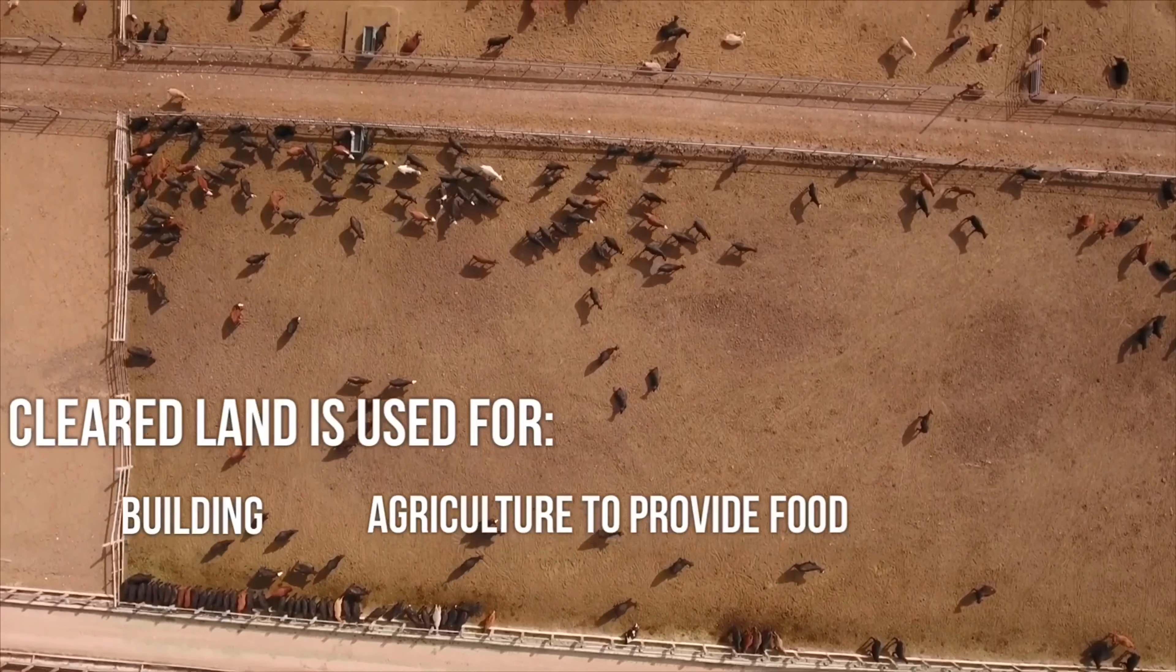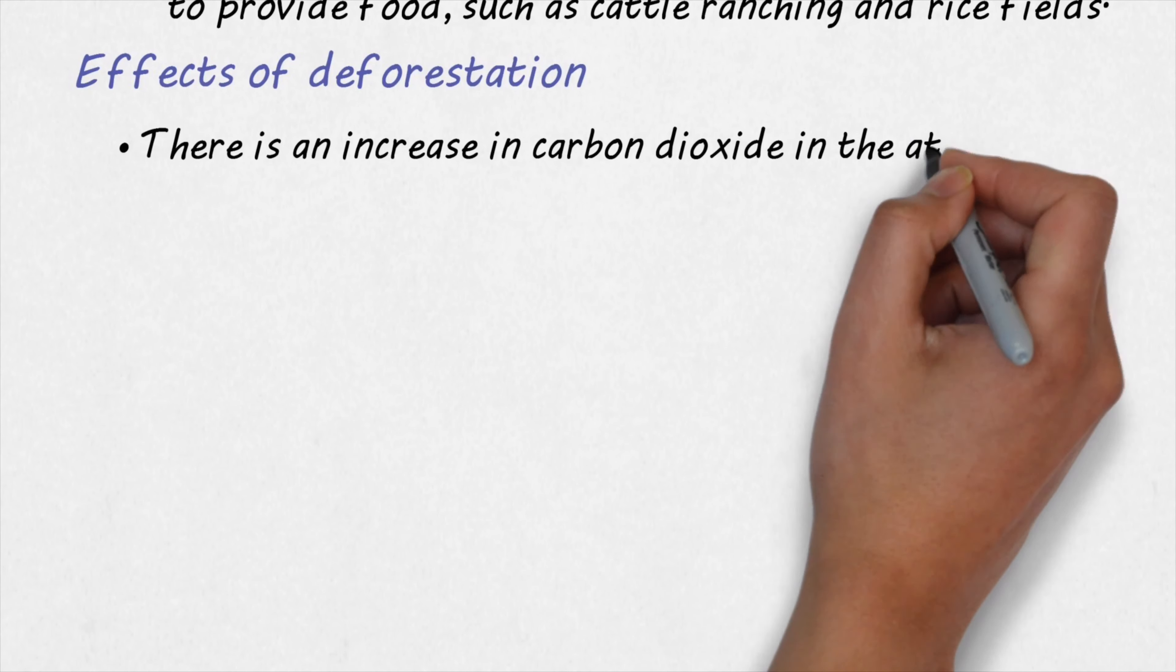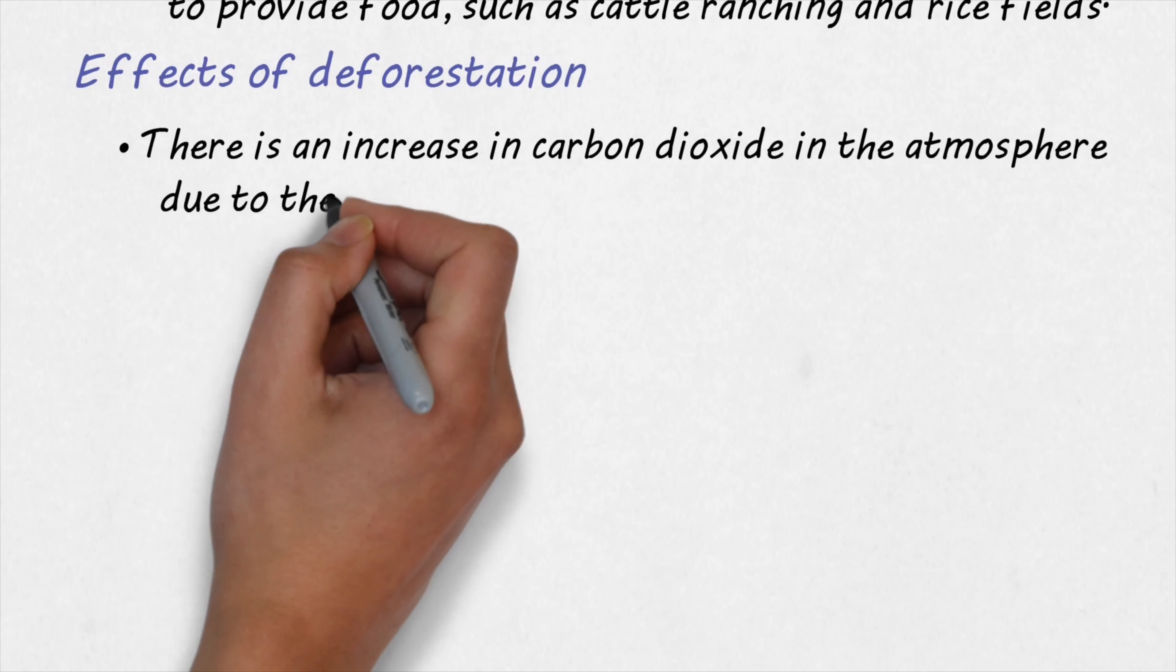So next, remember, we have to talk about what the effects are. And we need to name the gas. So first of all, we would say there's an increase in carbon dioxide in the atmosphere. And this is from burning the vegetation and also from the activities of the microbes as well when they decompose.